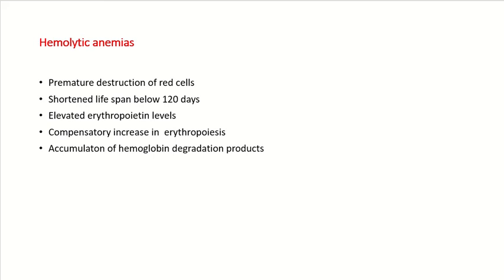As the rate of destruction of RBCs increases, there is a corresponding increase in production of erythropoiesis in the bone marrow. But then there comes a time when the rate of destruction of RBCs exceeds the bone marrow's capacity of producing new RBCs, and at that point it leads to anemia. Additionally, when there is increased destruction of RBCs, there will be increased accumulation of hemoglobin degradation products.